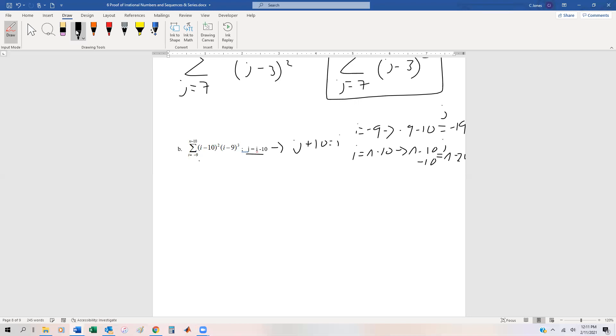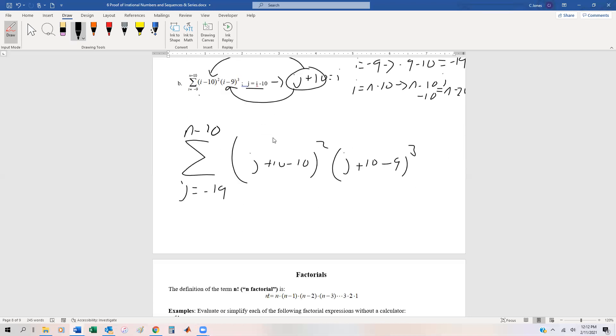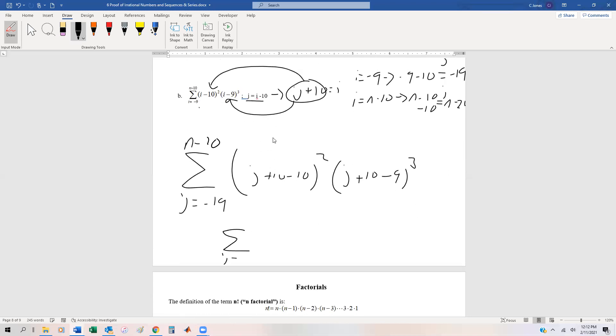These are in terms of j now. So our new series, j is going to be negative 19 to n minus 20. And now we're going to substitute j plus 10 back in for each of the i's. So we're going to get j plus 10 minus 10 squared over j plus 10 minus 9 cubed. And of course we can simplify this into j equals negative 19 to n minus 20, j squared over j plus 1 cubed. So that's what our change of variable is.